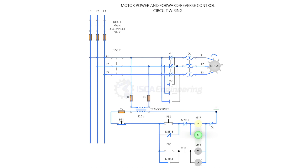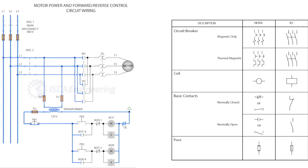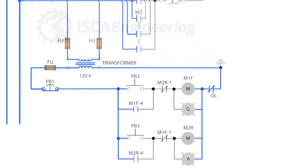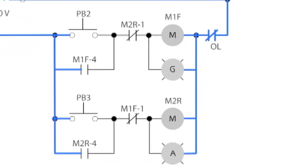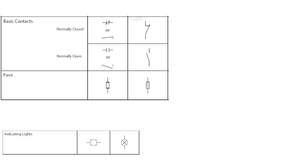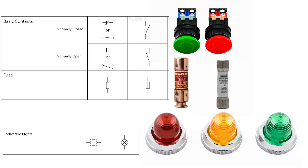A motor control circuit is a circuit that supplies power and removes power from a motor. When we use symbols in circuit diagrams, it makes it easier for us to read and understand them. We also use lines and symbols to show how the parts of a circuit are connected to one another. Note that not all electrical and electronic symbols are standardized — some symbols vary slightly by manufacturers. Also keep in mind that sometimes symbols look nothing like the real thing, so it's important to learn what the symbols mean.